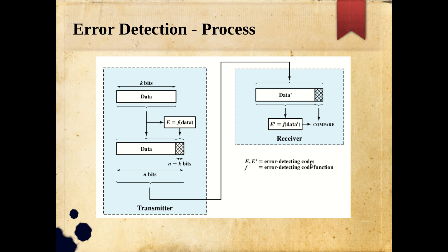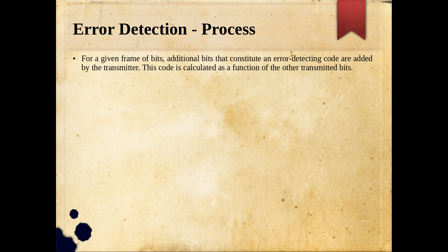E and e-dash are the error detecting codes generated at the transmitter and receiver sides respectively, and they are compared. F is the error detecting function — the logic used to generate the check bits — and that function determines the detection process as a whole. For a given frame of bits, the transmitter adds the n minus k error detecting bits, calculated as a function of the transmitted information bits.